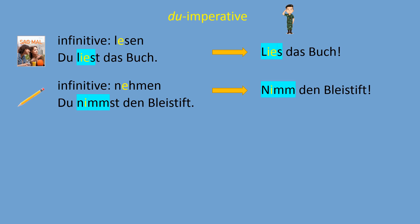This special rule — taking the stem from the du-form — applies only when the verb has a vowel change from 'a' to short 'e/i' or from 'a' to the diphthong long 'ie.' For all other verbs with stem-vowel changes, you simply use the stem of the infinitive. For example, the verb 'fahren': the du-form is 'du fährst' with ä, but we don't take that form for the command — we just use the infinitive stem: 'Fahr!'